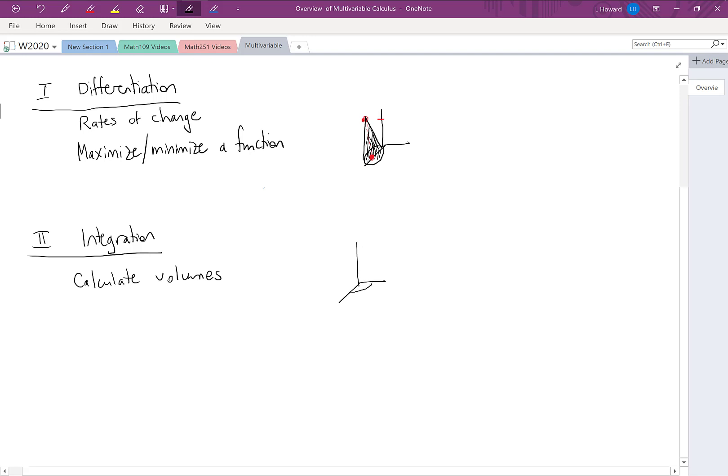Let me draw a picture for this. Imagine we have a bowl-shaped surface sitting upside down. We could ask for the volume between that surface and the x-y plane—in other words, the volume under that surface. We'll see how to do that with double and triple integrals.